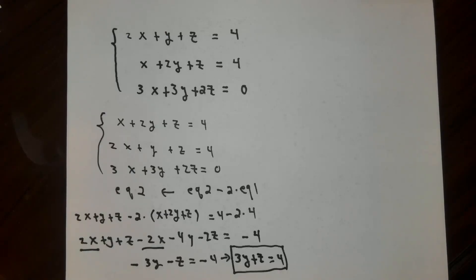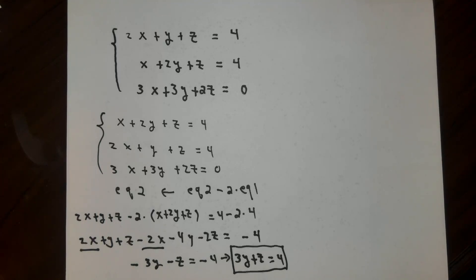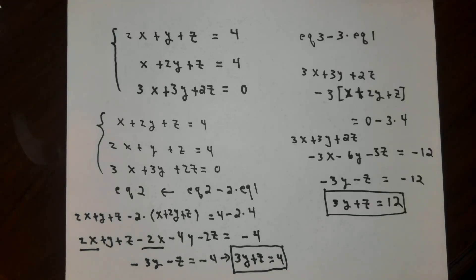My new equation number two is going to be equation two minus two times equation one. It's the same kind of calculation we did before. My new and improved equation number two is going to be 3y plus z equals 4. I also need my new and improved version of equation number three. Leaving out a verbal description of all the calculations, the new version of equation number three is going to be 3y plus z equals 12.